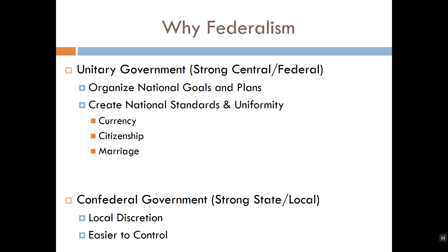We don't necessarily get to enjoy that same degree of uniformity in either confederal or federal governments. An example of confusion that might emerge when you deviate from the unitary system actually comes when we talk about same-sex marriage. Before the United States Supreme Court weighed in on the issue, we had a piece of federal legislation called DOMA — the Defense of Marriage Act — originally pushed by then-President Bill Clinton. Basically, this devolved the issue to the states; before the Supreme Court weighed in, every state got to create its own laws pertaining to same-sex marriage.